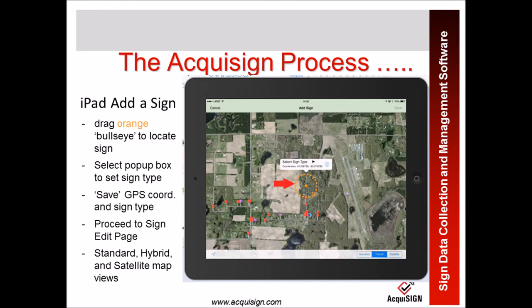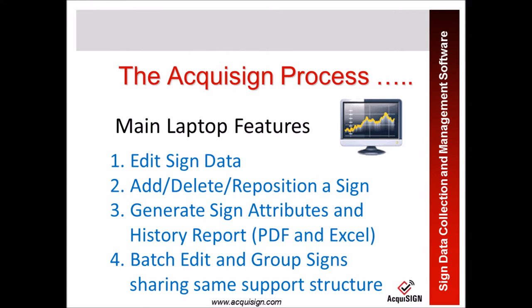Adding a new sign is the same as what you saw in the offline version — they function the same. You get the orange bullseye that you locate, choose the sign, and again this map can be displayed in various views.